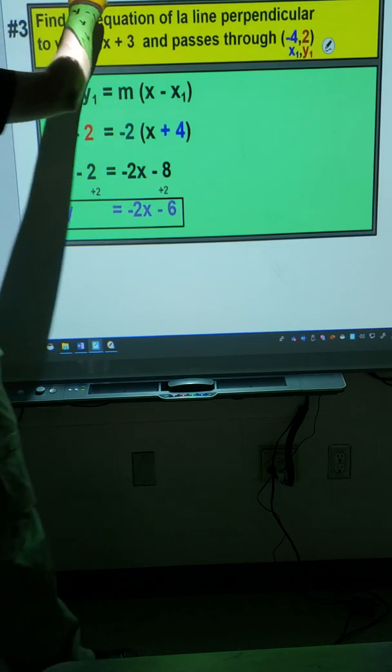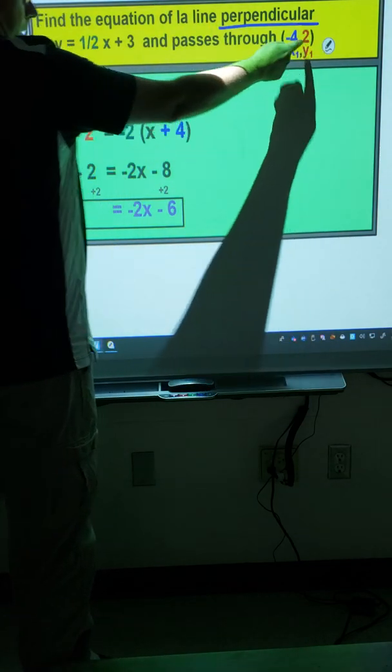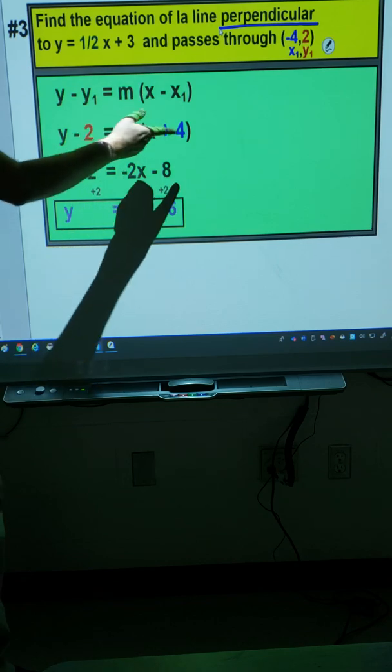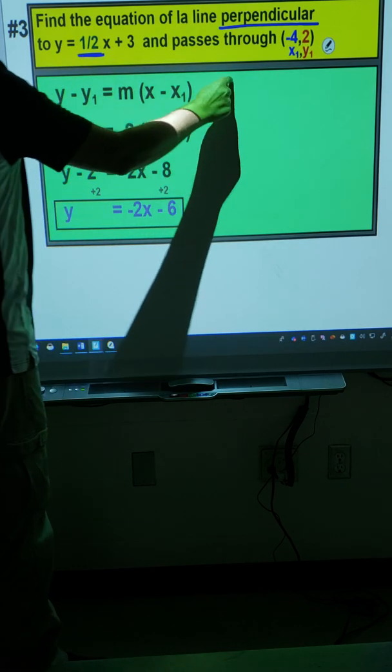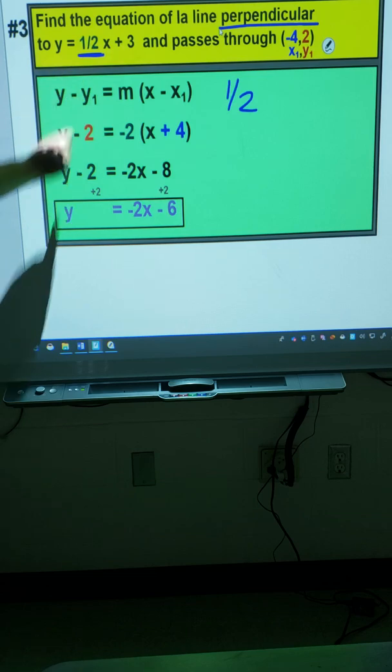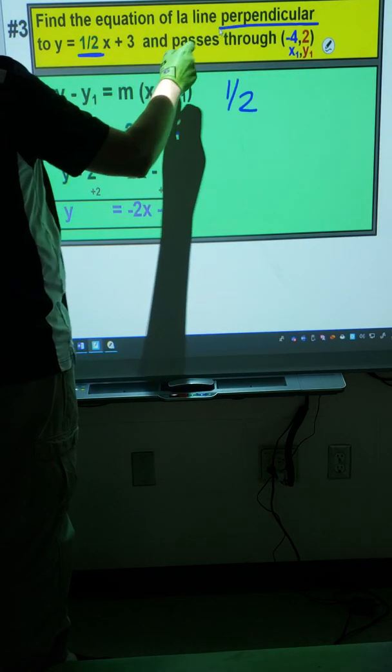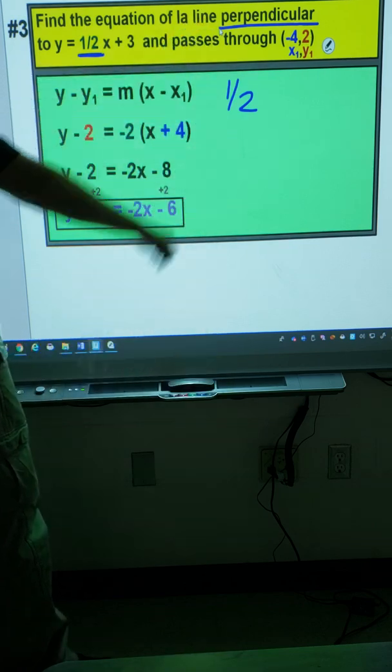Question 3. This time it says perpendicular. I did go ahead and label my point, and I've already started to substitute those in here. So the slope for this question is 1 over 2. As it starts with y equals, the number with the x is the slope. As it says perpendicular, I'm supposed to say line here, I'm not quite sure what happened there.